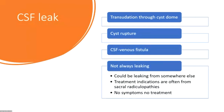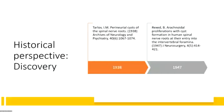CSF venous fistula — I haven't actually observed one on imaging in the sacrum, though I'm sure they exist. With the extensive venous anastomotic network, you have veins running over the system. They're not always leaking. If they are having these symptoms, often the patients have a connective tissue disorder — Ehlers-Danlos. They could be leaking from somewhere else. The treatment indications are often for their sacral radiculopathies, and if their headaches are better, that's a big bonus. But no symptoms, no treatment — I don't typically treat them even if they're growing larger but the patient doesn't have any symptoms.